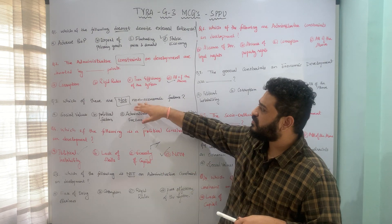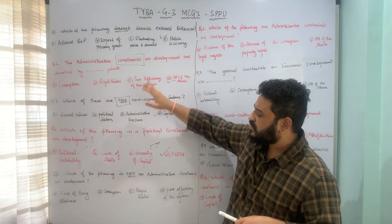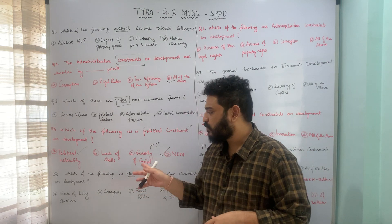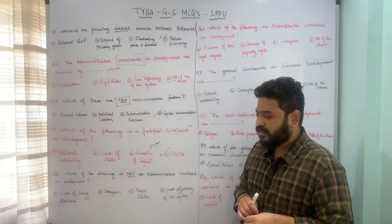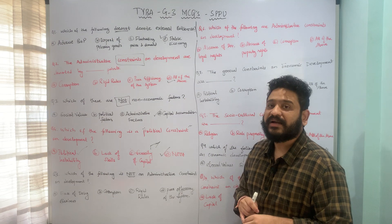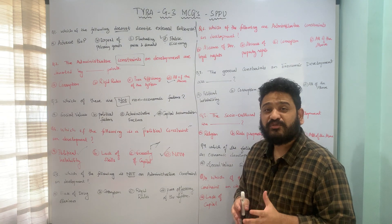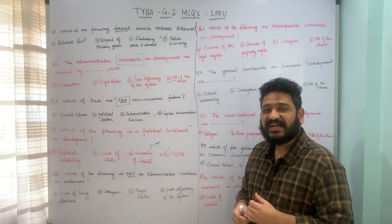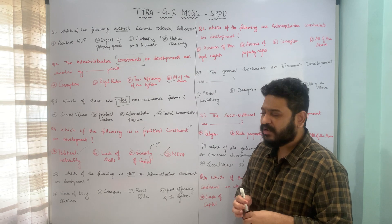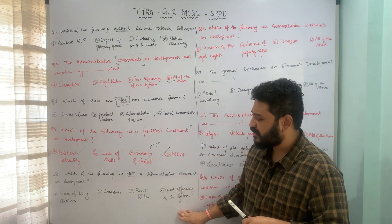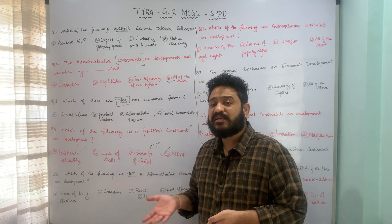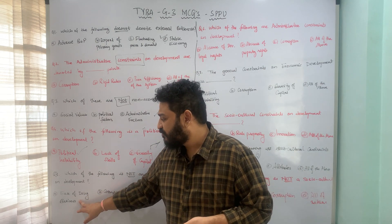The next question asks: which of the following is NOT an administrative constraint on development? The options are: A) ease of doing business, B) corruption, C) rigid rules, and D) poor efficiency of system. Corruption, rigid rules, and poor efficiency are all administrative constraints on development.